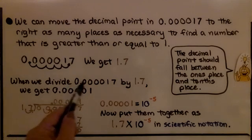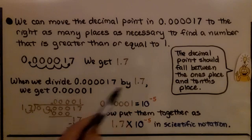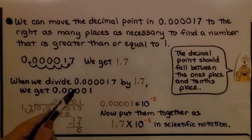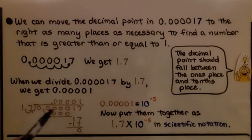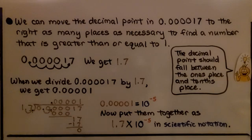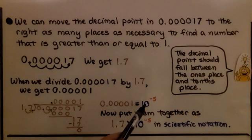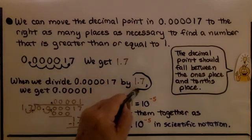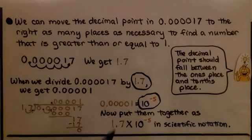When we divide 0.000017 by 1.7, we get 0.00001. In long division, if we've got a decimal point here, we move it over, which means this decimal point moves too, and in the quotient it goes straight up. 0.00001 is equal to 10 raised to the negative fifth power. Now we put them together: 1.7 combined with 10 raised to the negative fifth power gives us scientific notation.